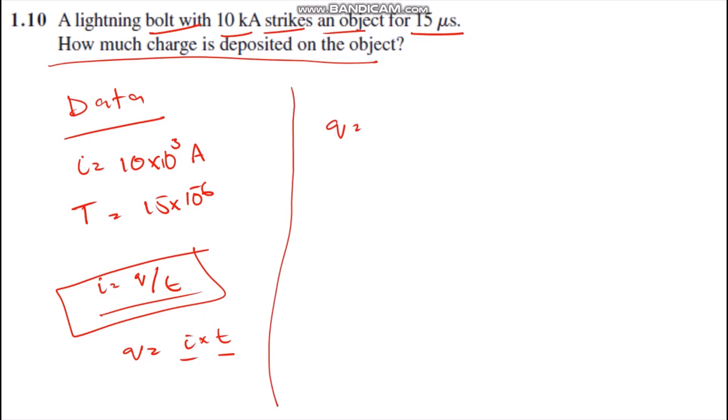Charge Q equals, simply putting the values: 10 × 10³ amperes multiplied by 15 × 10⁻⁶ seconds (15 microseconds). Then we get Q = 150 millicoulombs.